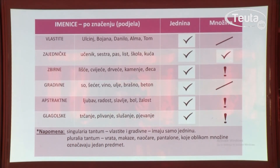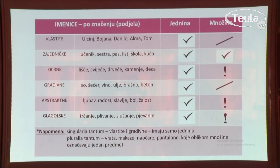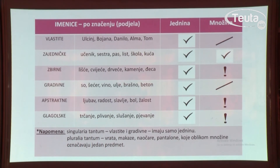Prelazimo sada na imenice, vrste imenica i njihovu promjenu, kao što smo i na početku časa rekli vezano za ishode. Imenice su promjenljive vrste riječi i tradicionalno se definišu kao riječi koje služe za imenovanje bića, predmeta, pojava i pojmova uopšte.